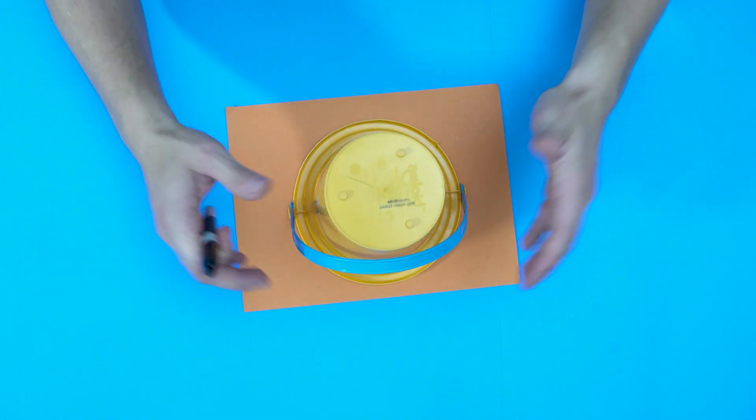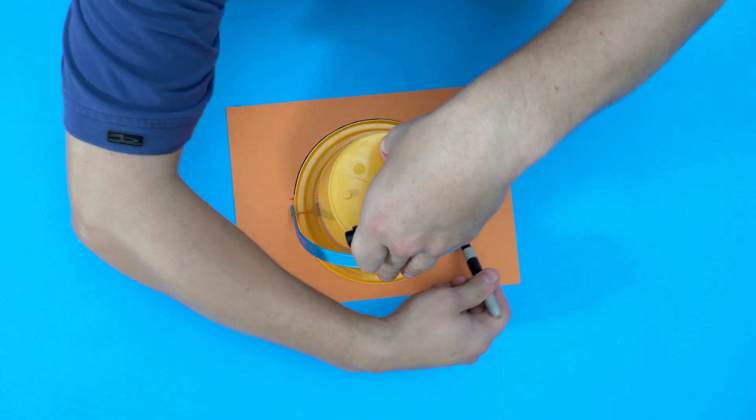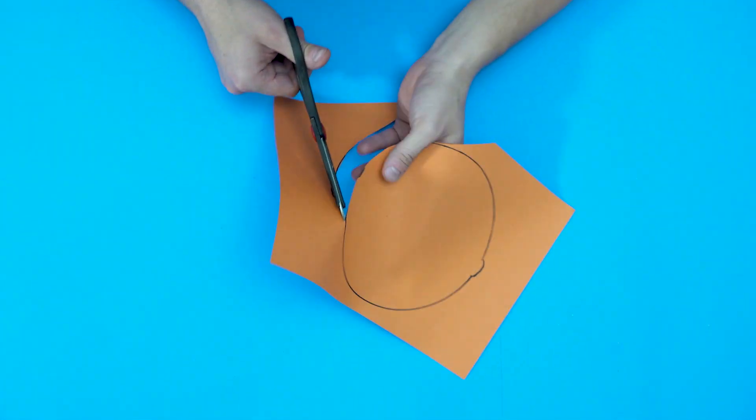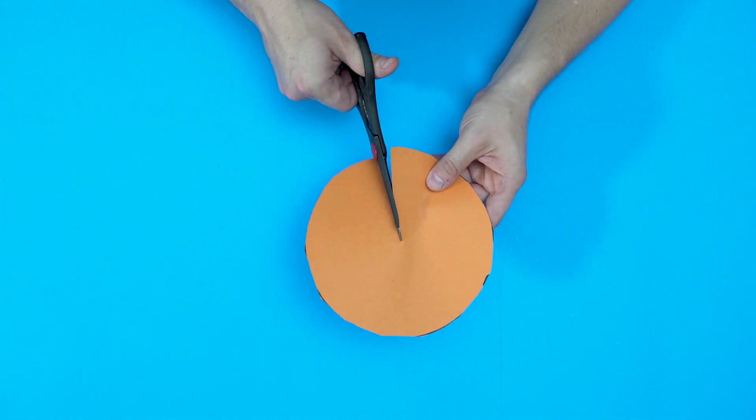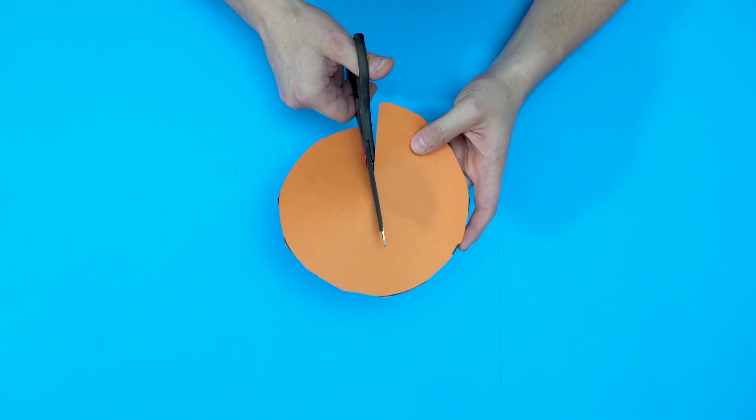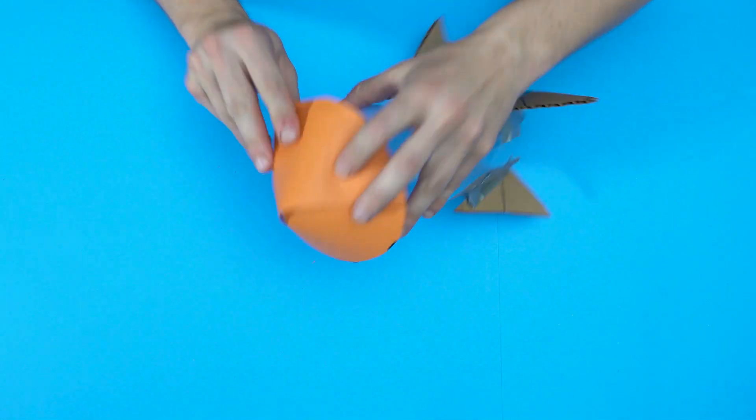All right, now it's time to make the nose cone. I found something that's a circle. Quickly trace around it, and I'm going to cut it into a circle here. Then, you're going to want to cut up about halfway or just a little bit more, so that's going to allow me to fold this into a cone shape.